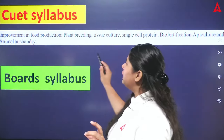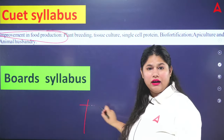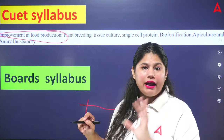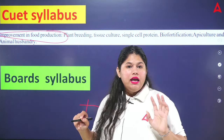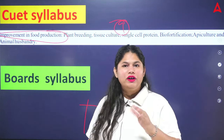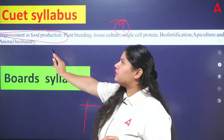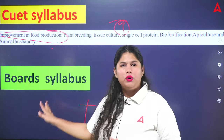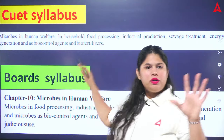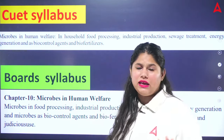Next is Improvement in Food Production, which is only in CUT — it is not coming in the board. Two chapters are removed, so this is in the CUT syllabus but you have to do it for CUT only, not the board. Next, Microbes in Human Life — both are the same, not a single topic differs; CUT and board are the same here. Then Biotechnology and its applications — the fourth unit is completely the same, no change, no problem.